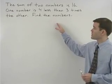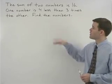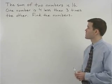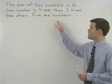The sum of two numbers is sixteen. One number is four less than three times the other. Find the numbers.